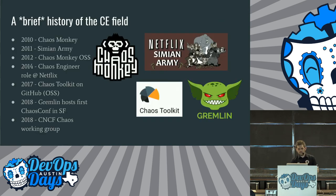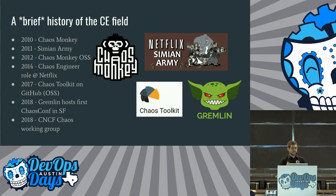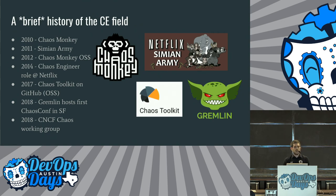Let's start with a history of chaos engineering. In 2010, Chaos Monkey came out from Netflix, followed the next year by Simian Army — released open source. In 2012 is the Chaos Monkey open release. In 2014, there's a role at Netflix for Chaos Engineer. In 2017, an open source project called the Chaos Toolkit appeared on GitHub. In 2018, Gremlin hosted the first Chaos Conference in San Francisco — a great event. Also in 2018, the Cloud Native Computing Foundation has a Chaos Working Group working toward becoming a SIG, with a GitHub repo where you can see meeting notes.